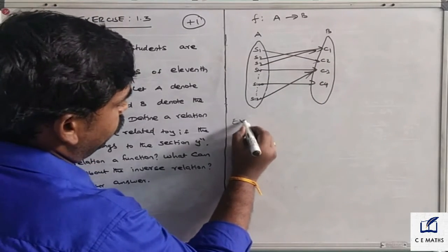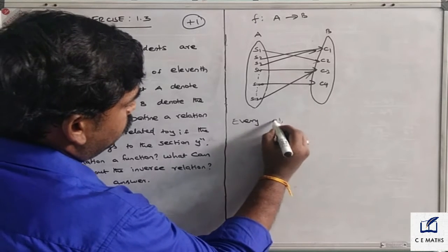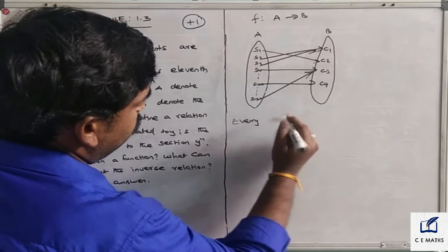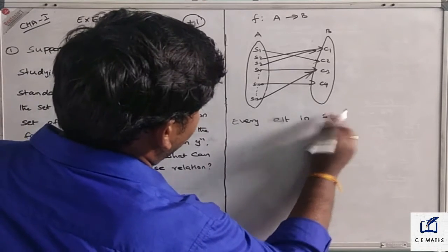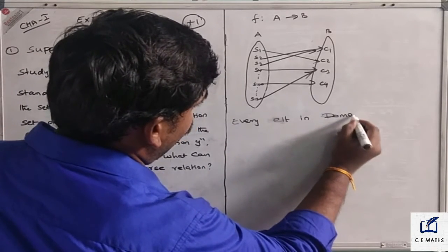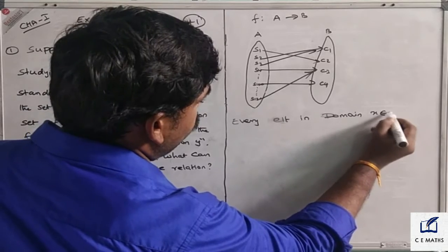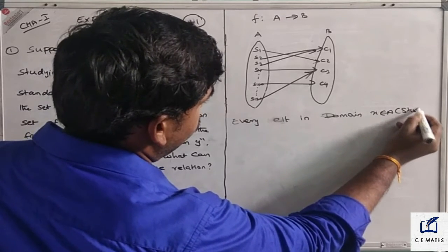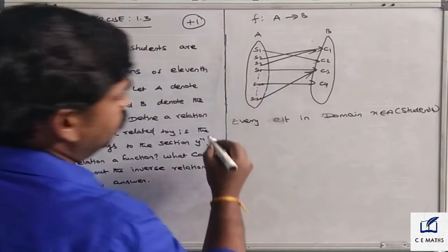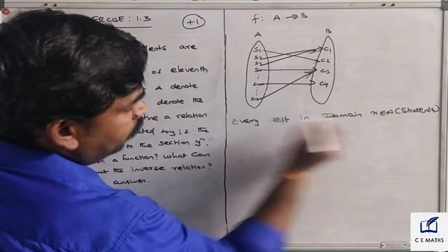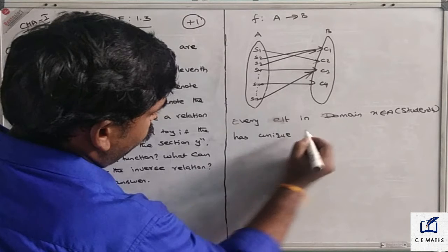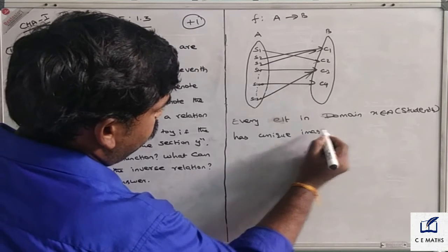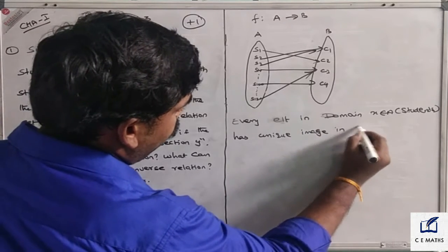Every element in the domain, X belongs to A students, has a unique image in the codomain.